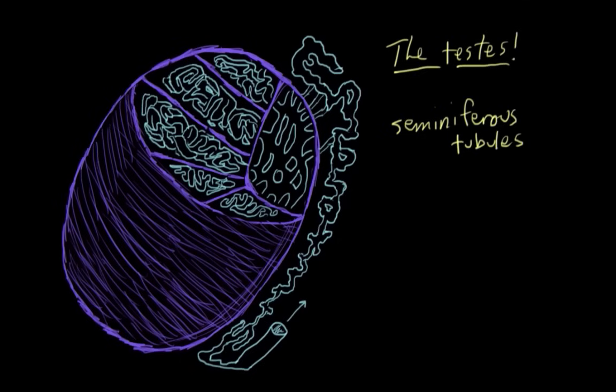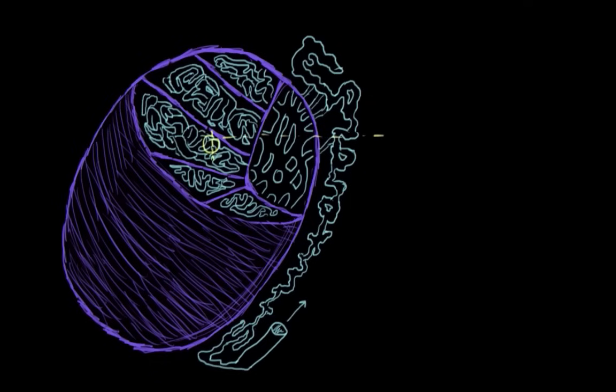So, to appreciate the process of sperm production and how it all happens, we need to take a look inside the seminiferous tubules. This is a cross-section of the tubule, sort of magnified so we could see the components a bit better.